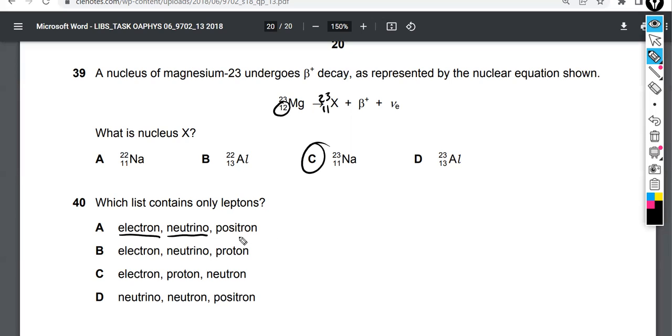What's a positron? It's a positive electron—the antimatter particle of an electron. And so it's also a lepton. So choice A: as soon as we read those three, we know those are all leptons. That's got to be the correct answer.